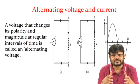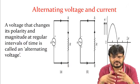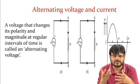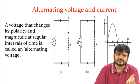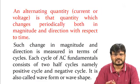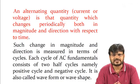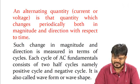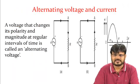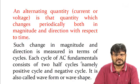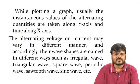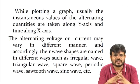An alternating quantity is one that changes periodically both in magnitude and direction with respect to time. Such changes are measured in terms of cycles. One cycle spans 0 to 2π. Each cycle consists of two half cycles: positive and negative — also called the waveform or wave shape. When plotting, instantaneous values are taken along the y-axis and time along the x-axis.